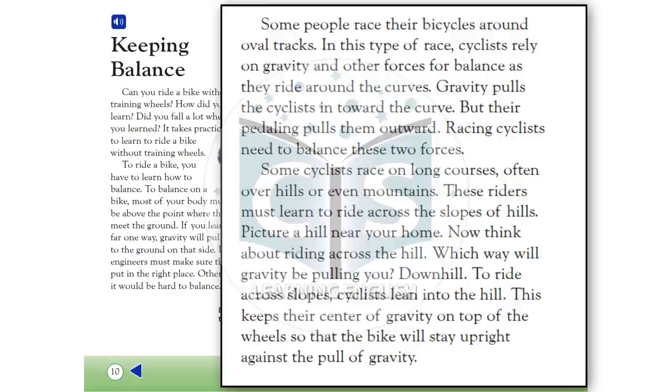Some people race their bicycles around oval tracks. In this type of race, cyclists rely on gravity and other forces for balance as they ride around the curves. Gravity pulls the cyclists in toward the curve, but their pedaling pulls them outward. Racing cyclists need to balance these two forces.